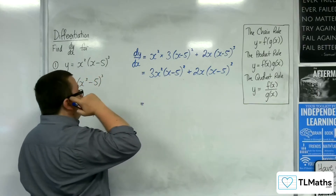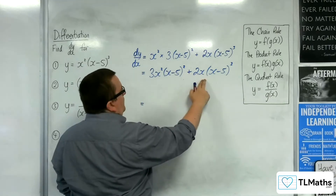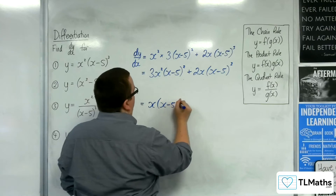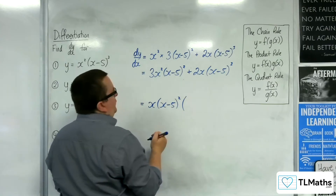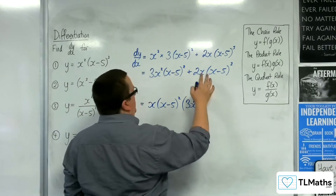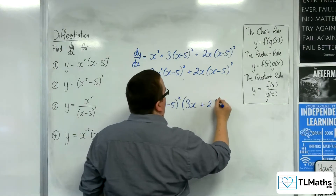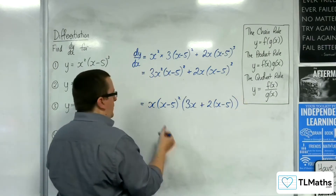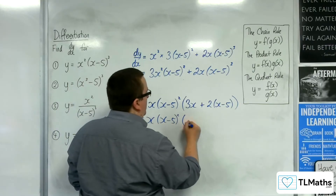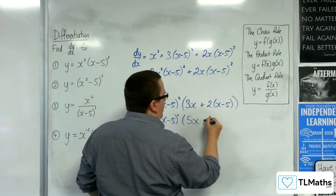We could factor out an x and an x minus 5 squared. Inside the bracket we'd have 3x left over, and 2 lots of x minus 5. So we'd have x(x minus 5) squared times (3x plus 2x minus 10), giving us x(x minus 5) squared times (5x minus 10).